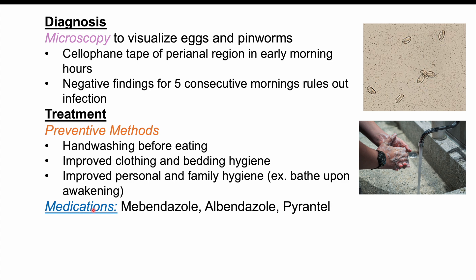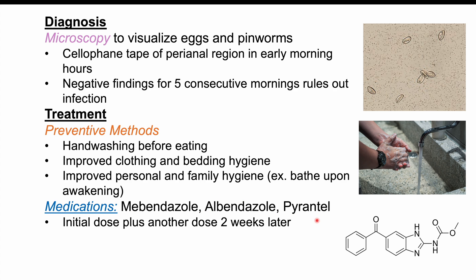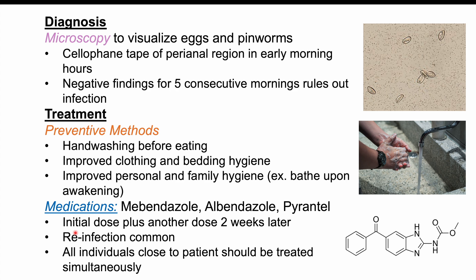If there is an infection, medications are used, including mebendazole, albendazole, or pyrantel. Normally an initial dose is given plus another dose two weeks later. Even with treatment, reinfection is common — if there are eggs in the environment or someone nearby has pinworms, reinfection can occur. Because of this, all individuals close to the patient should be treated simultaneously, including everyone in the same household, classroom, or daycare.